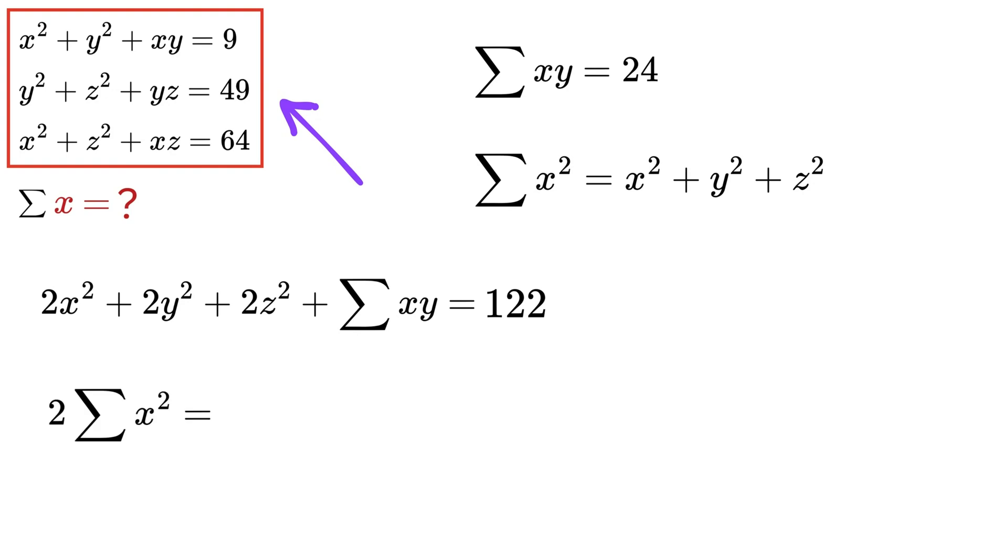Which is equal to 24, or this will become 98. So sum of x² becomes 49.